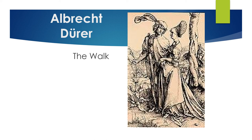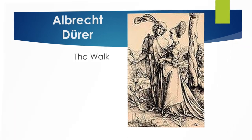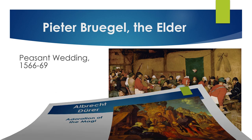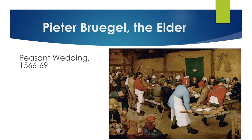Dürer also painted numerous self-portraits, and this is one of his works depicting everyday life. Another work shown is 'The Adoration of the Magi.' Pieter Bruegel the Elder seems to be the one the College Board loves most on tests. His works focus more on the lives of ordinary people — for example, 'Peasant Wedding' captures the festivities of a small village. He was not as influenced by the Italian Renaissance as some other Northern Renaissance artists.